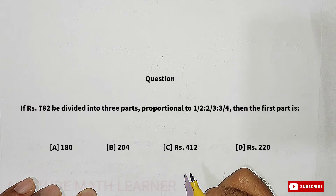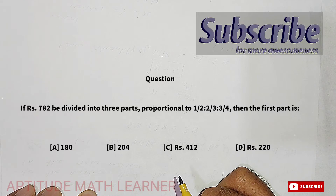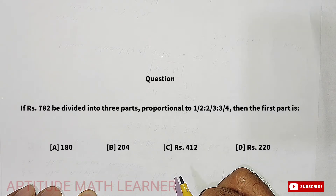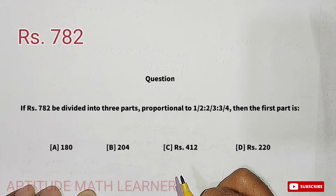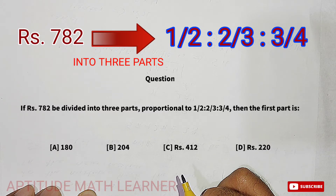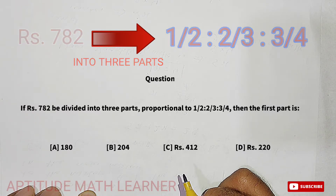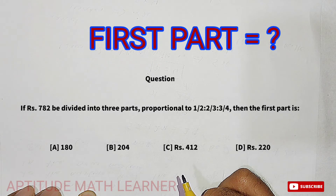Hello and welcome to my YouTube channel Aptitude Math Learner. Today we have a very interesting question: if ₹782 is divided into three parts proportional to 1/2 : 2/3 : 3/4, then what is the first part?